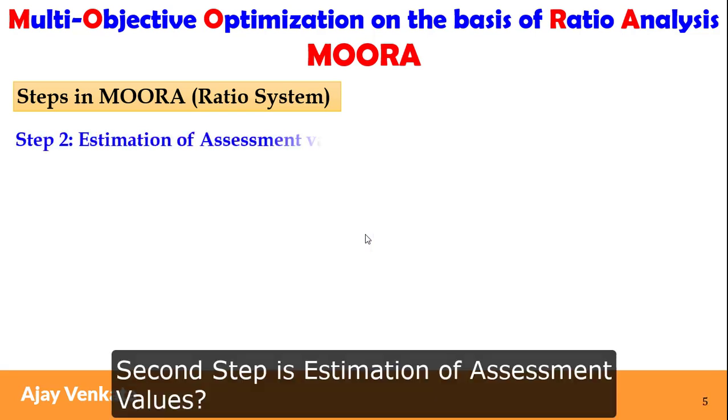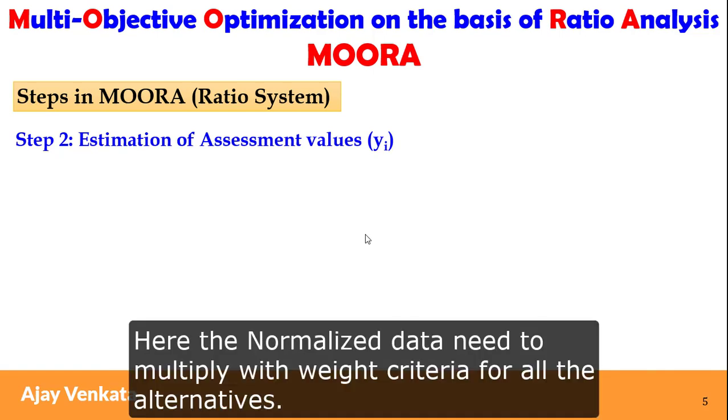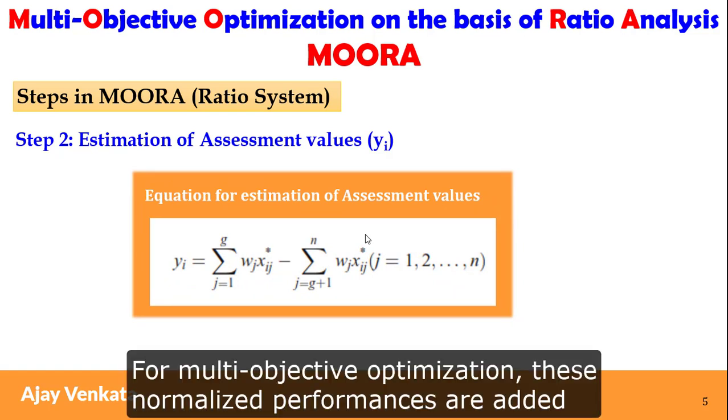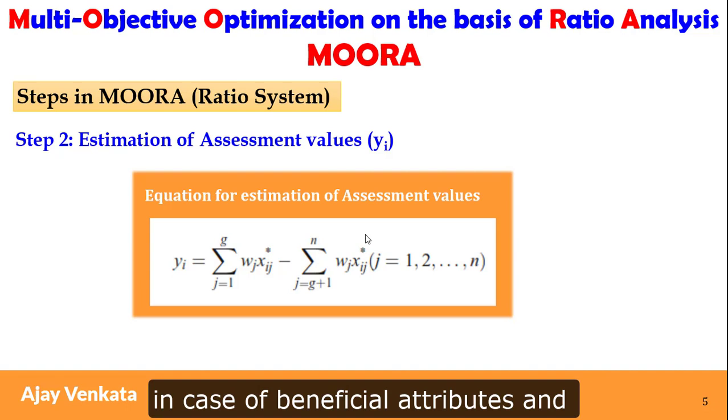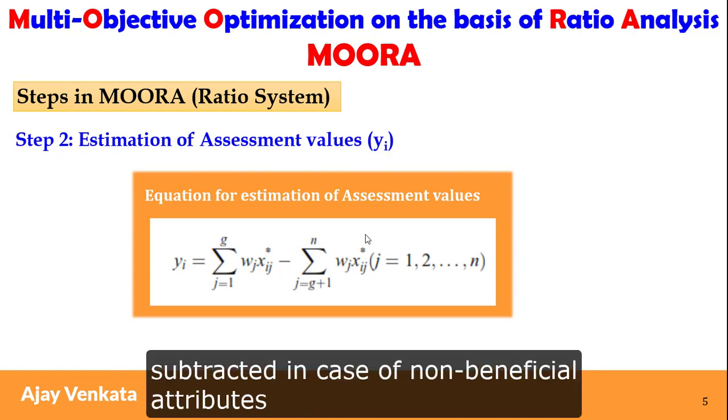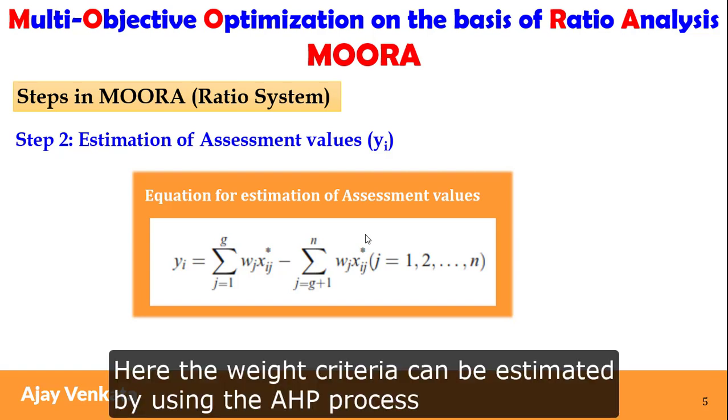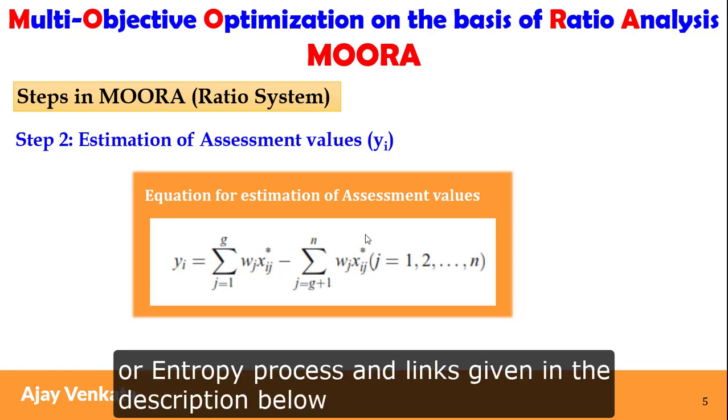Second step is estimation of assessment values. Here the normalized data needs to be multiplied with the weight criteria for all alternatives. For multi-objective optimization, these normalized performances are added in case of beneficial attributes and subtracted in case of non-beneficial attributes. Here the weight criteria can be estimated by using the AHP process or entropy process, and the links are given in the description below.